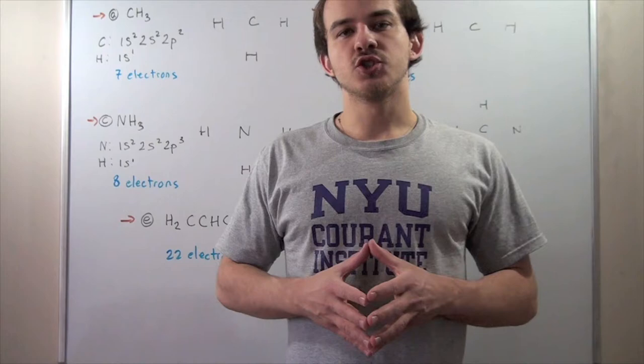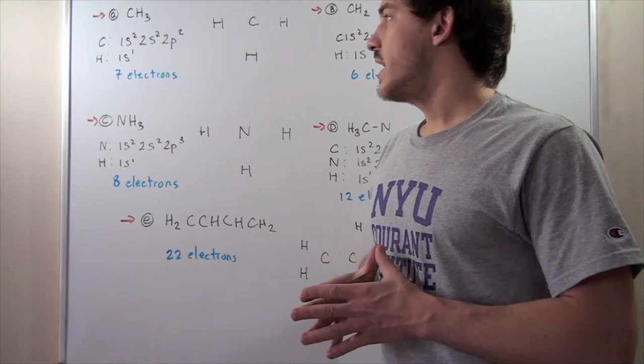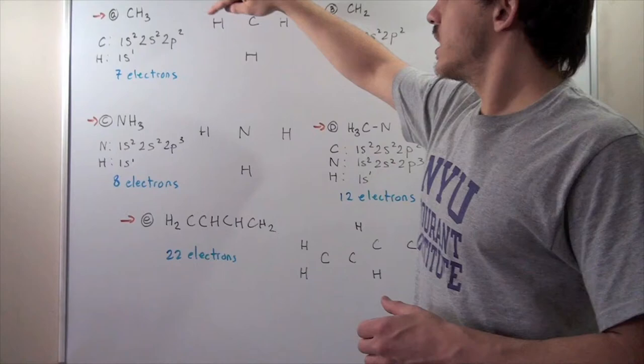In this lecture, we're going to continue drawing out Lewis dot structures. So let's begin. Here we have A, B, C, D, and E — five examples. So let's begin.